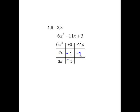2x times negative 1 is negative 2x. And 3x times negative 3 is negative 9x. And when you add these together, you do get negative 11x. So with one try, we found our possible answer. So 2x minus 3, 3x minus 1 on the other diagonal.